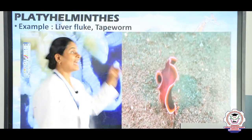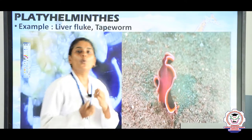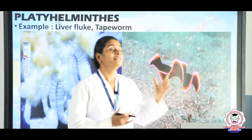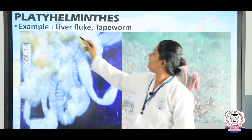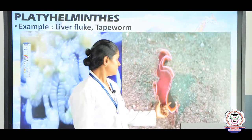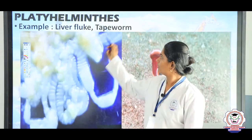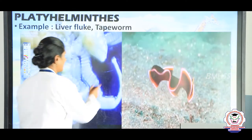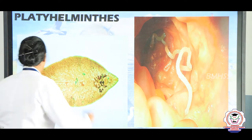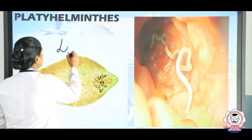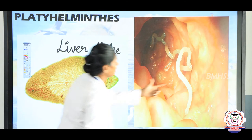The third phylum is Platyhelminthes. 'Platy' refers to flat and 'helminthes' refers to worms. Under this phylum we see many forms — examples are liver fluke and tapeworm. You can see here: this is the tapeworm and this is the liver fluke.